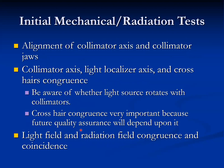Initial mechanical radiation tests include alignment of the collimator axis and collimator jaws, collimator axis, light localizer axis, and crosshair congruence. Be aware of whether the light source rotates with the collimator. Crosshair congruence is important because future quality assurance will depend upon it.